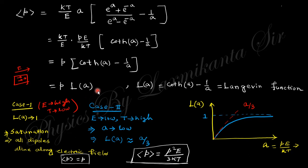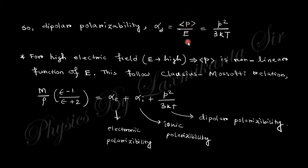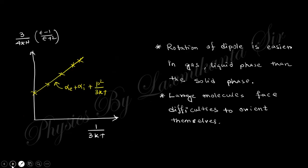Considering two limiting cases: when the electric field is high and temperature is low, the Langevin function tends to 1 — this is saturation. When the electric field is low and temperature is high, the Langevin function approximates a/3, giving an average dipole moment of p²E/3kT. Thus the dipolar polarizability is α = p²/3kT. For a higher electric field this is a non-linear function of E. This satisfies the Clausius-Mossotti relation, which has three parts — electronic, ionic, and dipolar polarizability — with the dipolar term being p²/3kT as obtained from the Langevin-Debye equation.